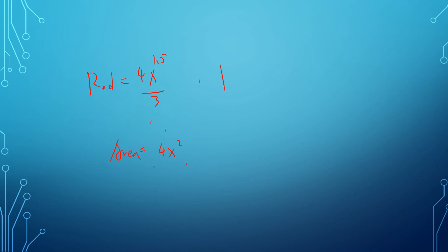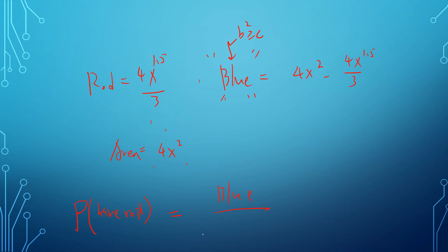The blue region — where b² > c, meaning real roots exist — has area 4x² − 4x^(3/2)/3. The probability of having real roots is the blue area divided by the total area, and we take the limit as x → ∞. This gives (4x² − 4x^(3/2)/3) / 4x². As x → ∞, the term 1/(3√x) → 0, so the answer is 1.